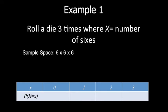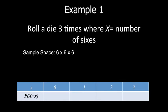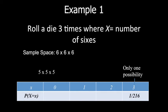The sample space is 6 to the power of 3, or 6 × 6 × 6 = 216. Getting three sixes: there is only one possibility — a 6, a 6, and a 6 — so P(X=3) = 1/216. Getting zero sixes: for each roll it's either 1, 2, 3, 4, or 5 — five possibilities — so P(X=0) = 125/216.